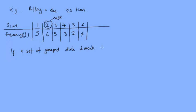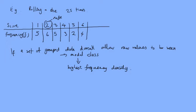Now if a set of grouped data doesn't allow the raw values to be seen, we need the modal class, and this is the one with the highest frequency density.